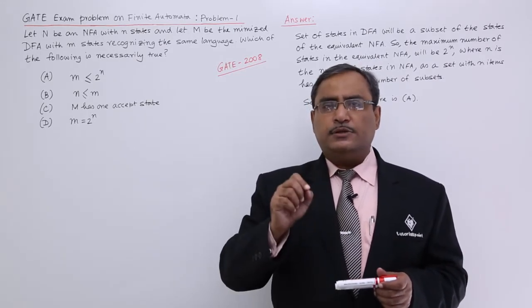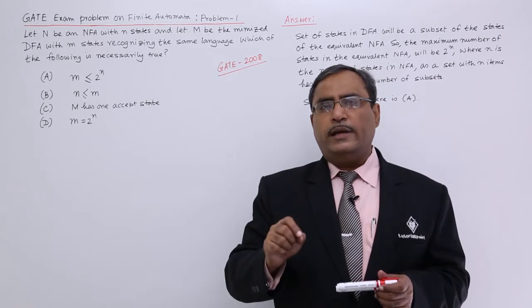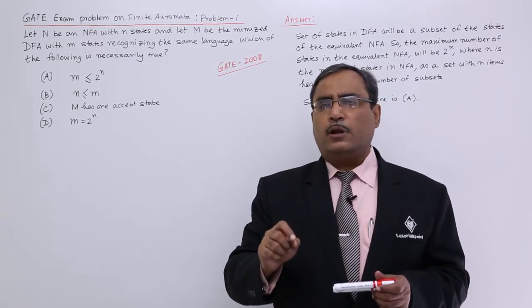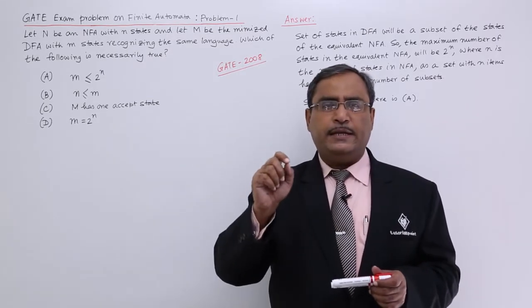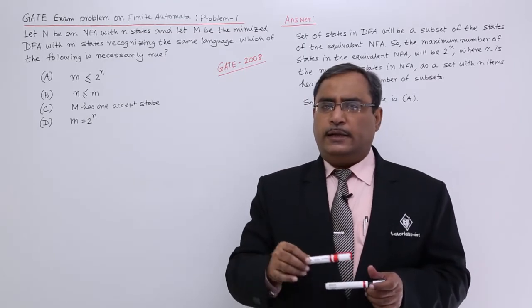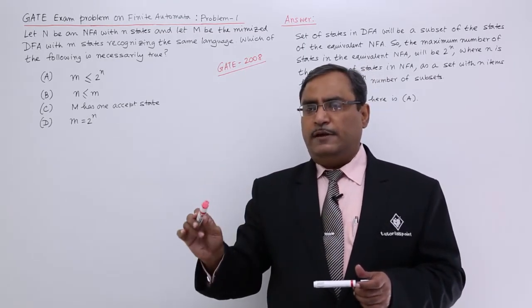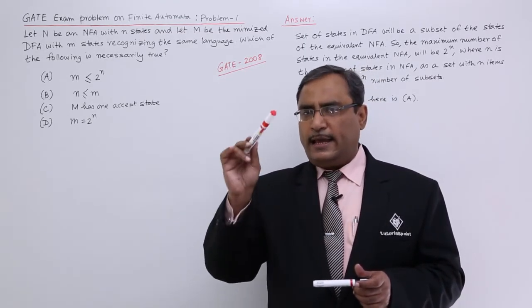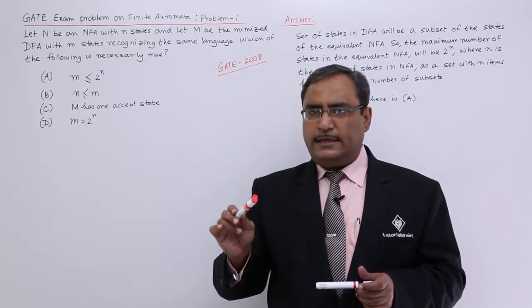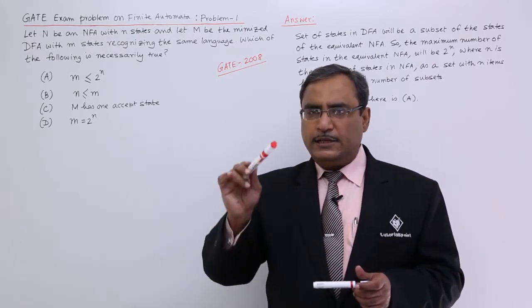there you can see that let us suppose in the non-deterministic automata, we had say 4 number of states say A, B, C, D. In the DFA, we are having states like A, AB, AC, ABD in this way.